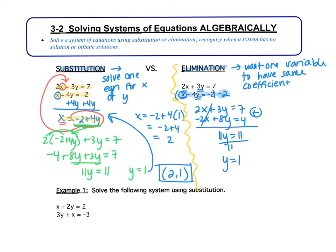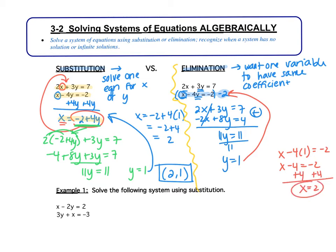With elimination, you are eliminating a variable — getting rid of one of them. Divide by 11 and we get y equals 1 again, same as before. We can plug that 1 into either equation. I'll plug it into the second one: x minus 4y equals negative 2, so x minus 4 equals negative 2. Adding 4 to both sides, I get x equals 2. Write the answer as a point: 2 comma 1. This is the point where the two lines intersect — the only point true for both equations.